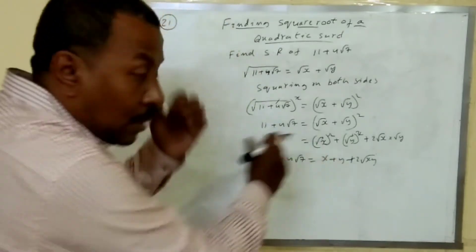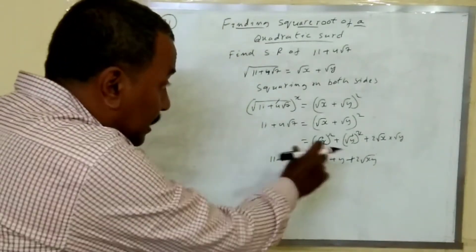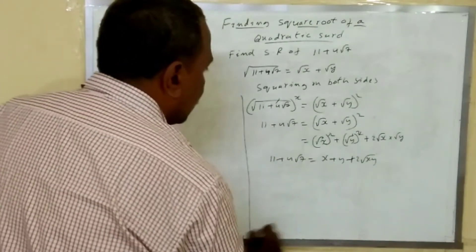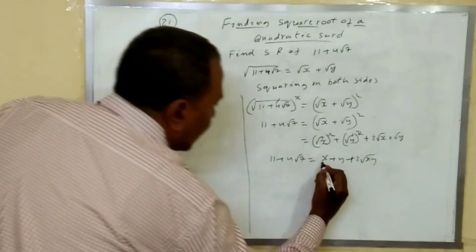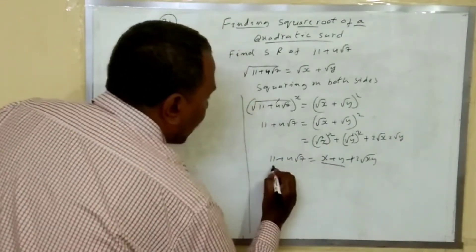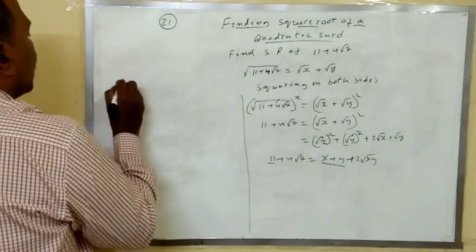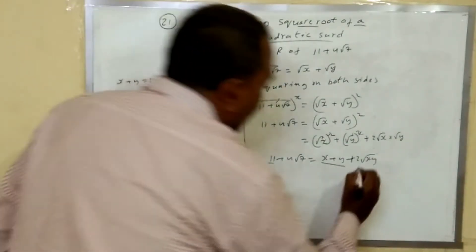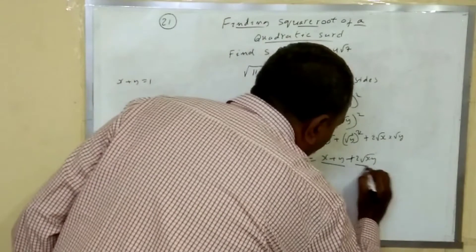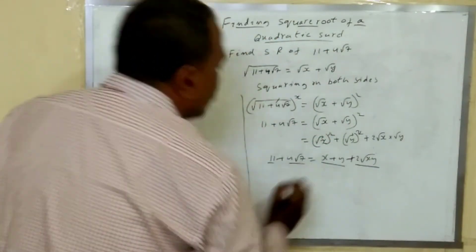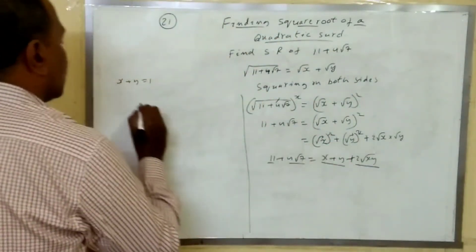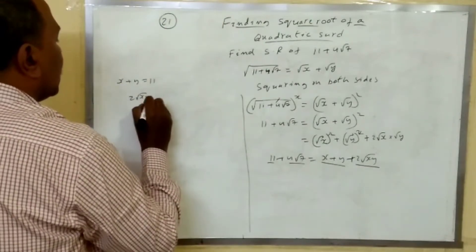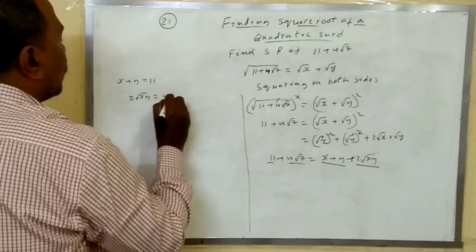Now, comparing the corresponding terms: in place of x plus y, 11 is here, so x plus y equals 11. In place of 2 root xy, 4 root 7 is here, so 2 root xy equals 4 root 7.